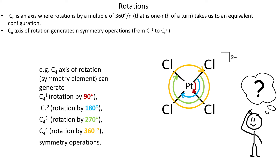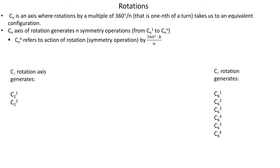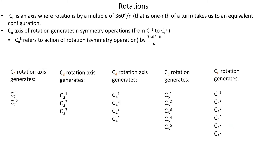The fact that a single axis can generate multiple operations creates a problem, because we need to distinguish between all the operations generated by that axis. Therefore the following nomenclature is adopted: CNK refers to the action of rotation by 360 degrees multiplied by K divided by N. For example, C2 generates C2¹ (rotation by 180°) and C2² (rotation by 360°). C6 generates rotations by 60, 120, 180, 240, 300, and 360 degrees. The same applies to C3, C4, C5, and so on.